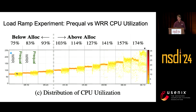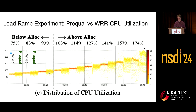Looking at the distribution of CPU across machines: Weighted Round Robin has a very tight distribution as we ramp up load — it's really keeping CPU even across machines. Whereas Prequel spreads it around trying to find those holes. But as we saw, it does a much better job at minimizing latency, which is really the whole point. Hence, you should not balance load — you should minimize latency.